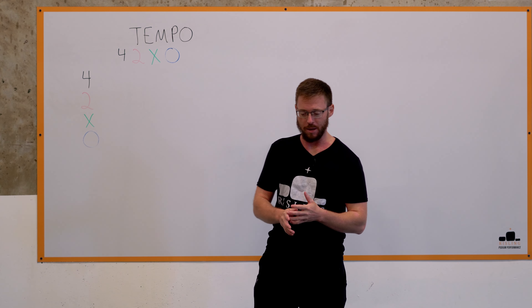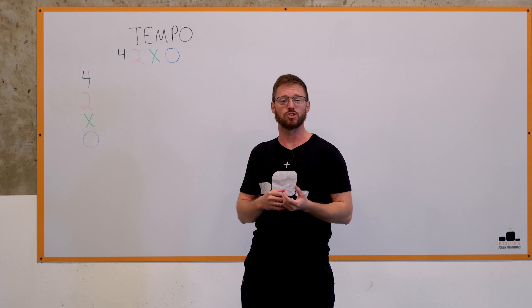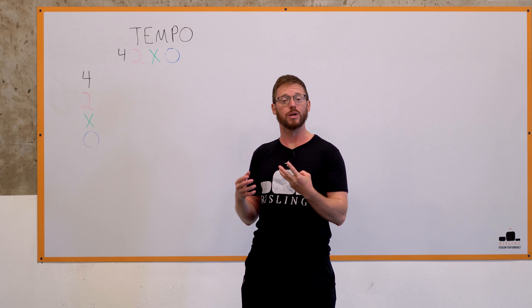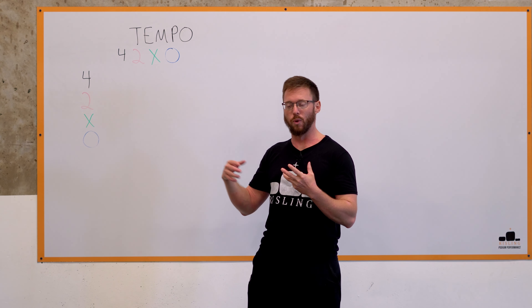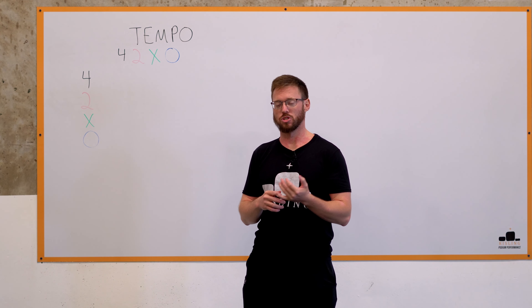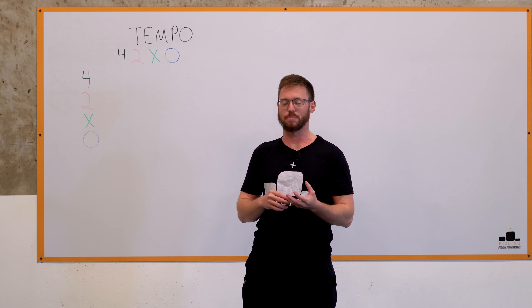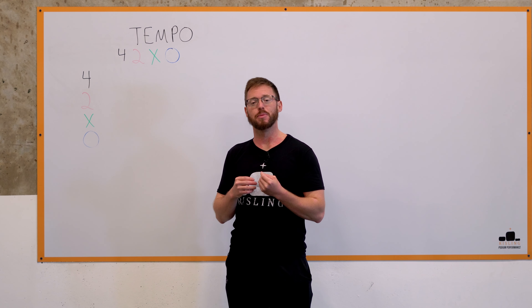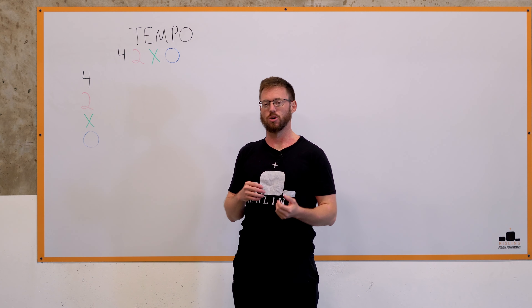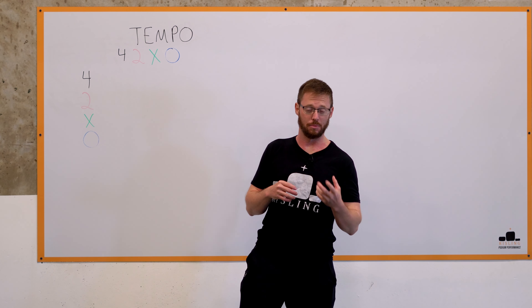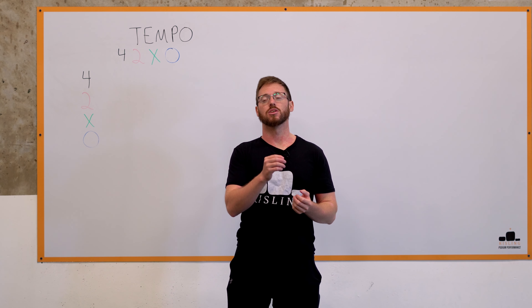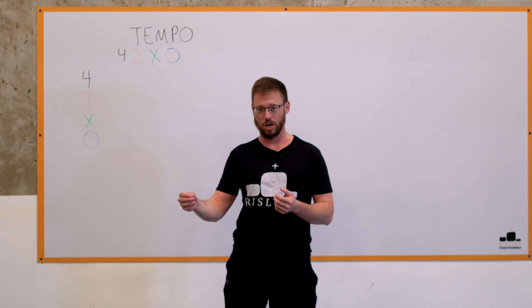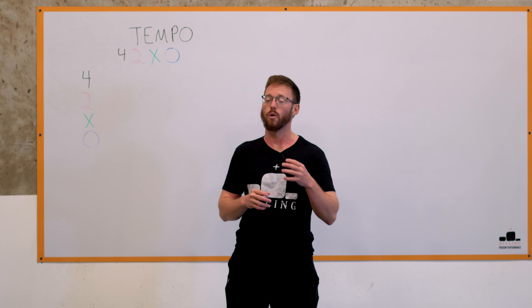How tempo came about is that Australian strength coach Ian King first came up with it using a three-digit write-down, and then Canadian strength coach Charles Poliquin took that, expanded upon it, and added the fourth digit. What tempo basically allows us as strength and conditioning coaches and personal trainers to do is identify and decide what the training outcome is going to be from a session or from a lift.